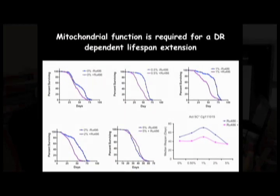As this figure shows, in normal flies, you see a nice bell-shaped curve showing maximal effects of dietary restriction at about 1% yeast.